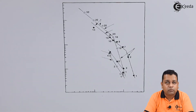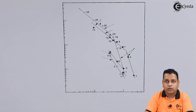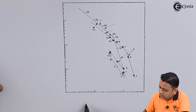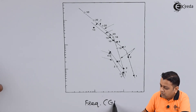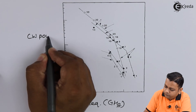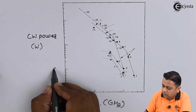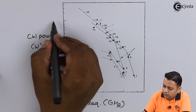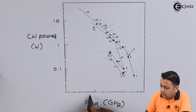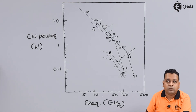We can now summarize the performance of the diodes for the three types of semiconductor compound materials with respect to the output power generated for microwaves. On the horizontal axis we take frequency in gigahertz, and on the vertical axis we take continuous wave power in watts, with markings of 0.1, 1, and 10. Frequency markings are 5, 10, 50, 100, and 500, up to 50 GHz.